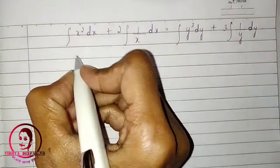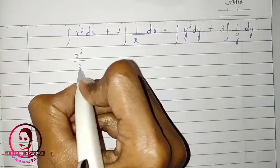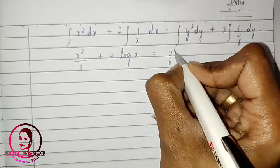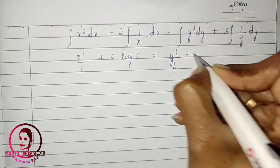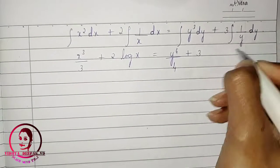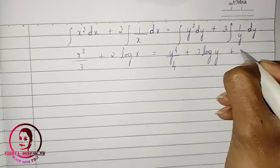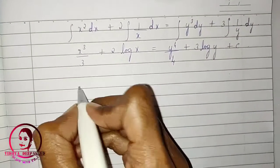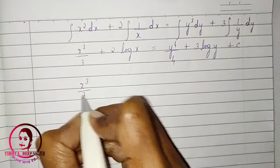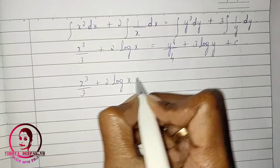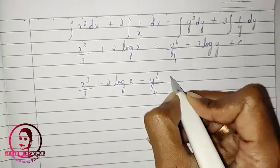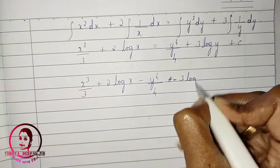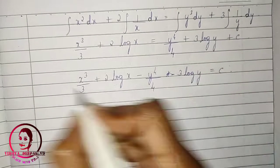Integrating: x³/3 + 2·log x = y⁴/4 + 3·log y + c. Rearranging: x³/3 + 2·log x − y⁴/4 − 3·log y = c. This is the general solution.